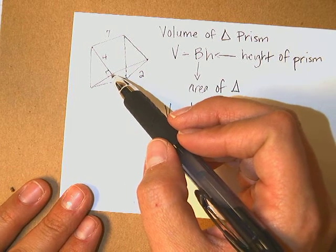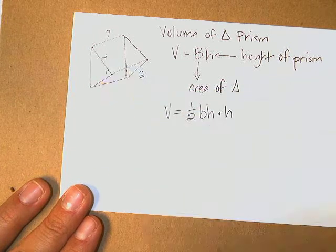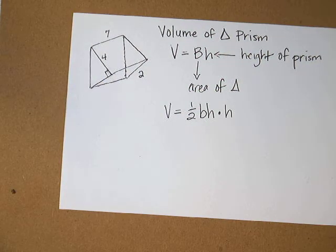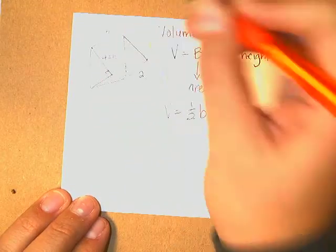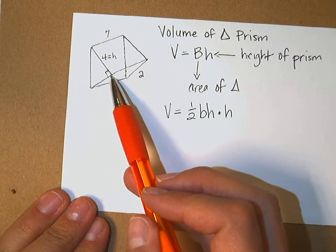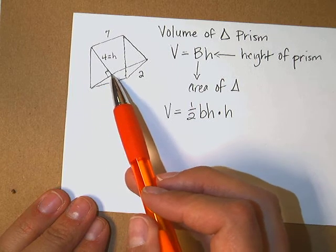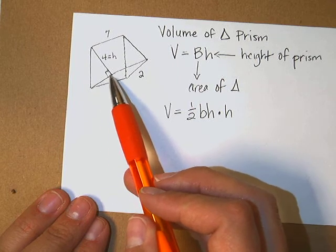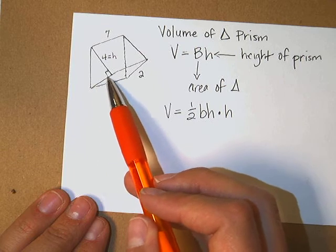I'm going to call 4 the height. So 4 is my height, which means this right here is my base, but there's not a measurement for that line. Does that mean I can't solve this question? No. So what do I do?